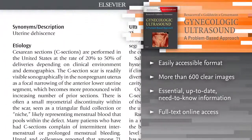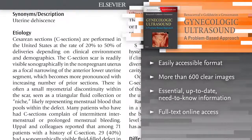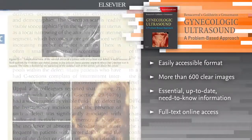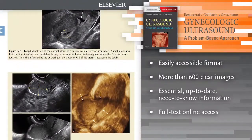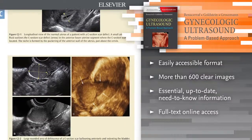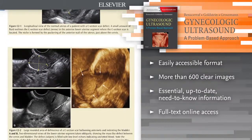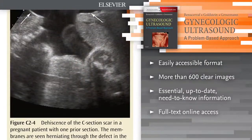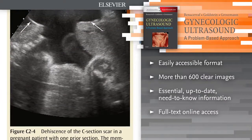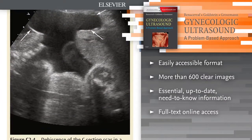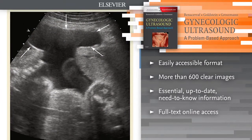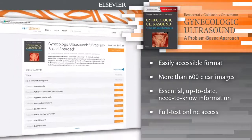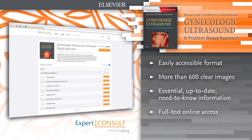Glean all essential, up-to-date, need-to-know information about Mullerian duct abnormality, endometriosis, ovarian cancer and uterine sarcoma, as well as normal pelvic ultrasound and common normal variants.